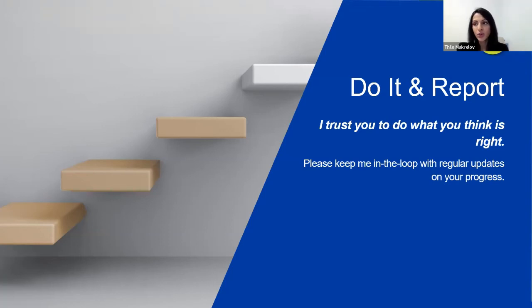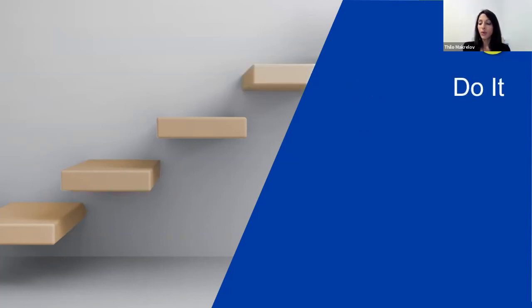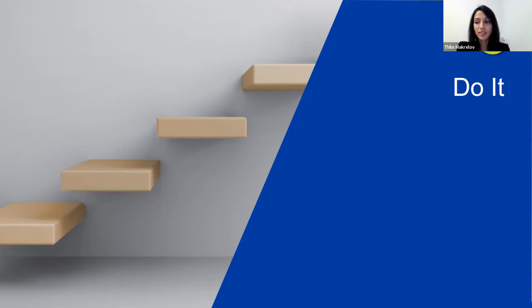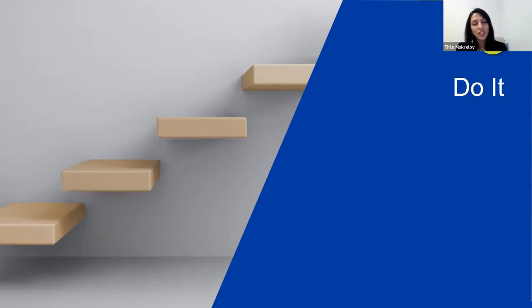If the team wants to implement a new process, give them the go-ahead to do what needs to be done but keep you in the loop on outcomes and areas of challenge. The fourth level of delegation is simply 'Just Do It.' I trust you to take this task off my plate and run with it to the best of your ability — there is no need to check back with me unless you have questions or need my input. You cut the cord and let the employee run with it. For example, someone responsible for paying the electricity bill doesn't need to tell you they paid it every month.